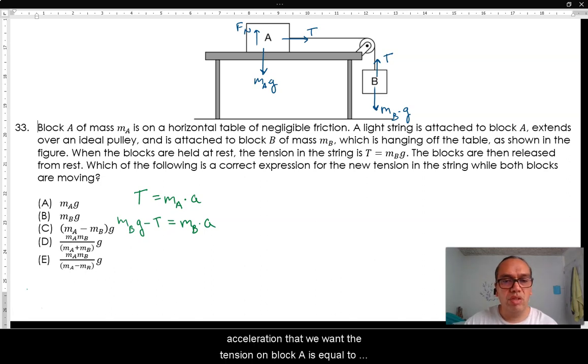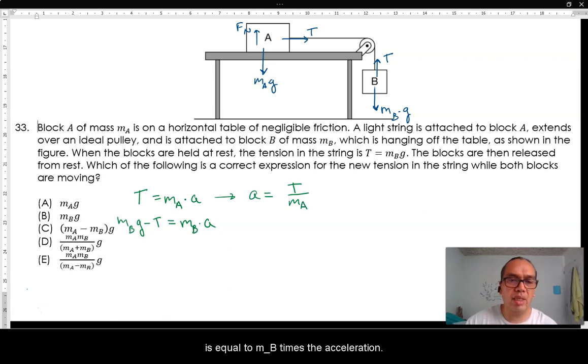Remember that we don't want the acceleration. We want the value of the tension. So, we can consider that acceleration is equal to tension divided by the mass A, and substitute that in the second equation.